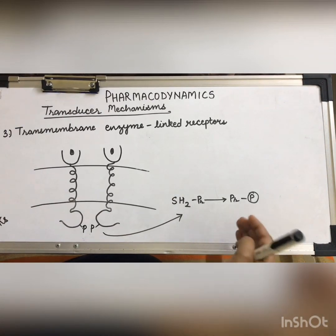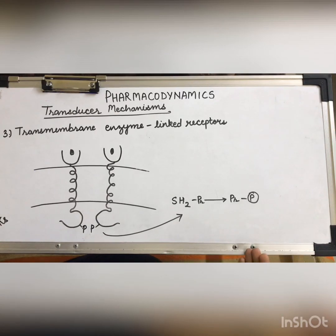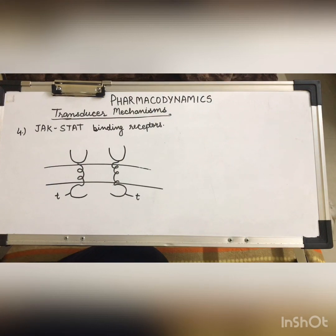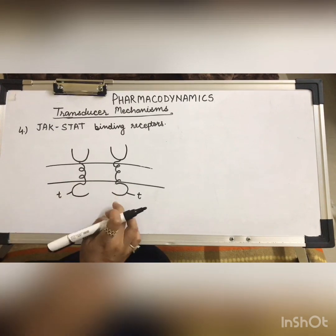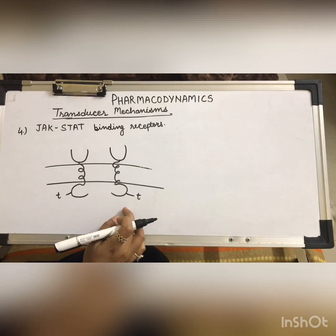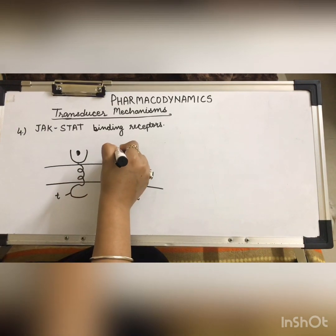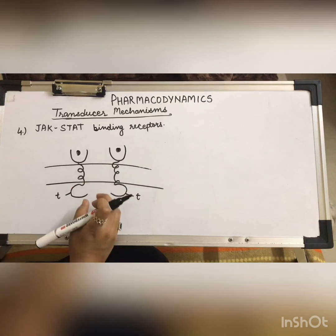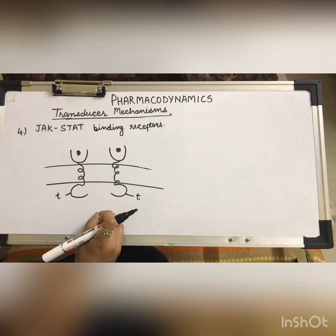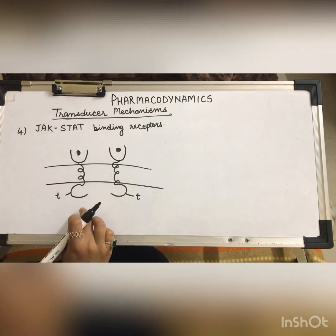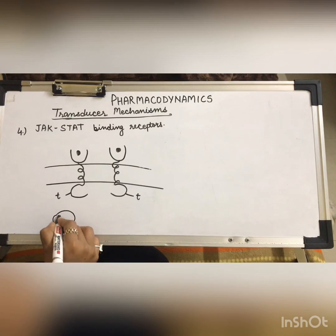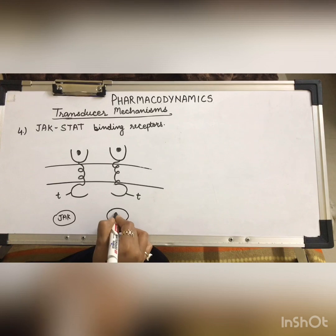Phosphorylation of these proteins activates them, producing responses such as activation of metabolic reactions, cell differentiation, and cell growth. The fourth type of transducer mechanism is JAK-STAT receptors. These look somewhat similar to transmembrane enzyme-linked receptors, but the difference is they do not have intrinsic kinase activity. Agonist binding induces dimerization and conformational changes.